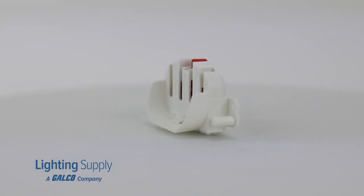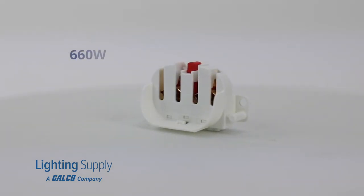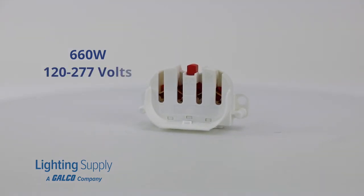Intended for vertical screw mounting, this socket has a 2G11 base with a maximum wattage of 660 watts and a voltage range of 120 to 277.